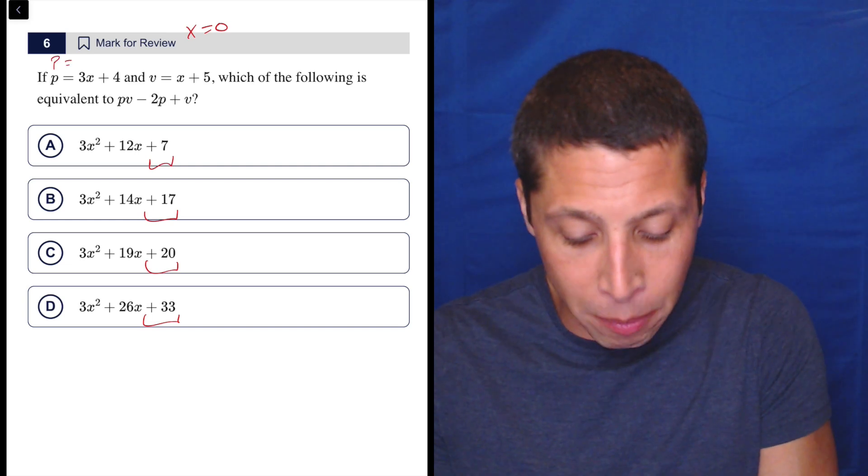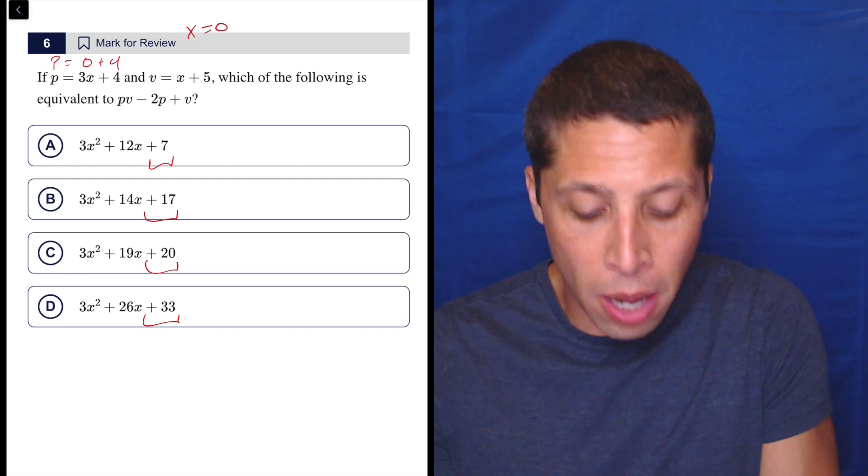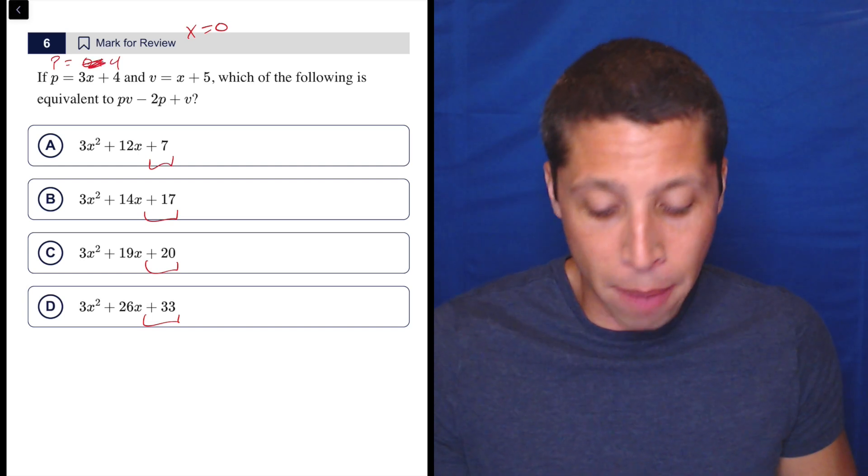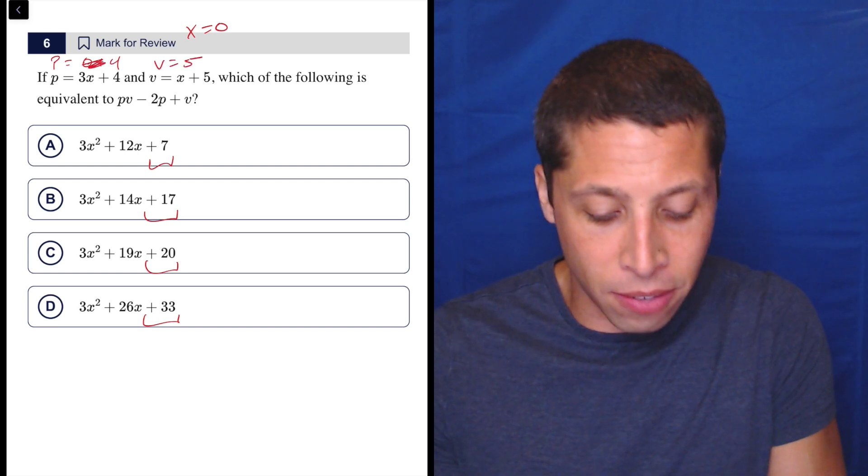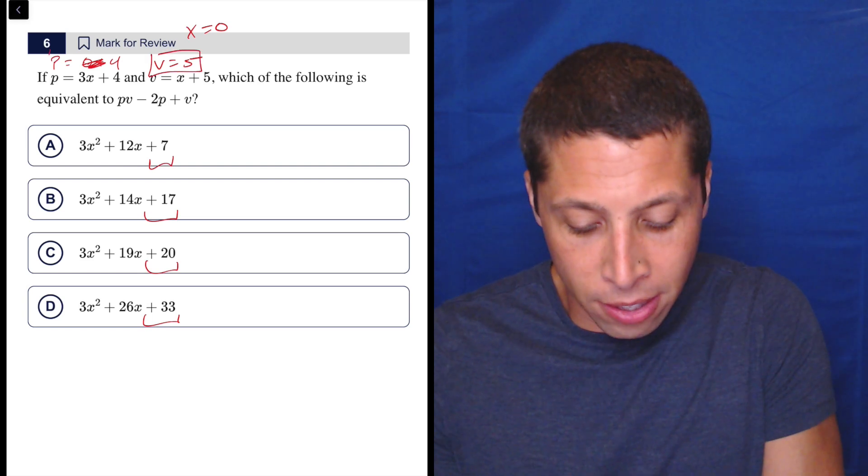So P is going to be three times zero, which is zero, plus four. So let's just get rid of the zero, and P is four, and V is five, right? So it takes two seconds to do that.